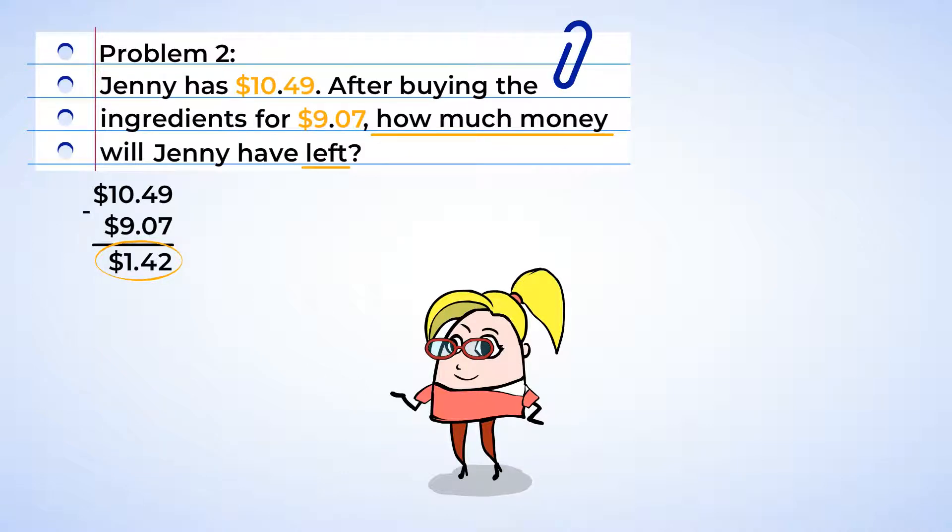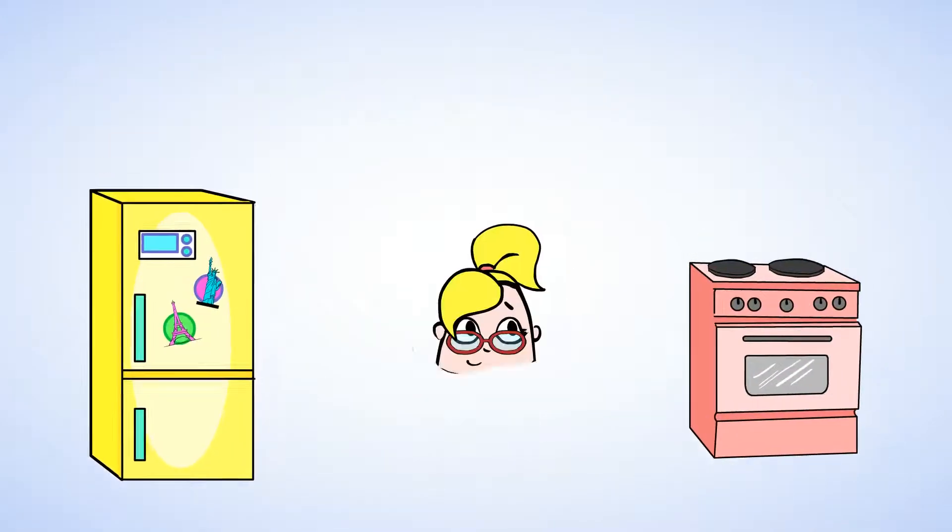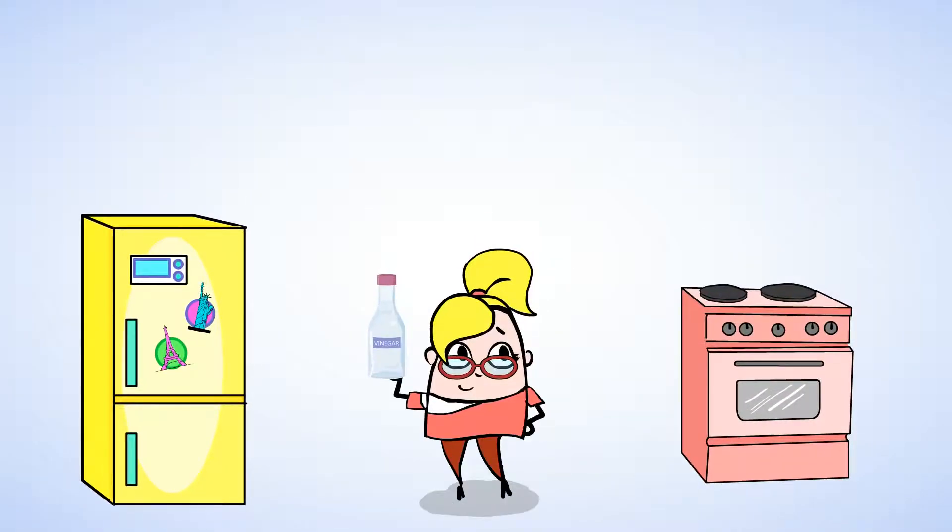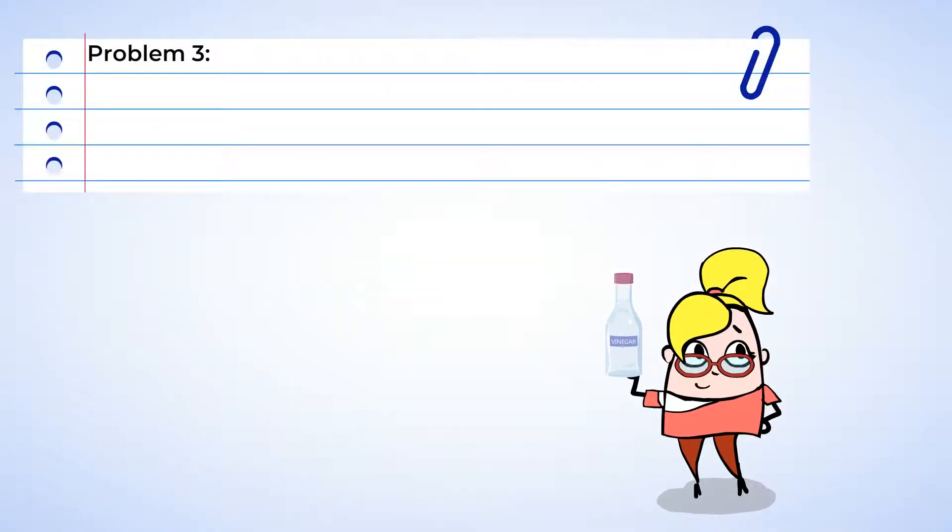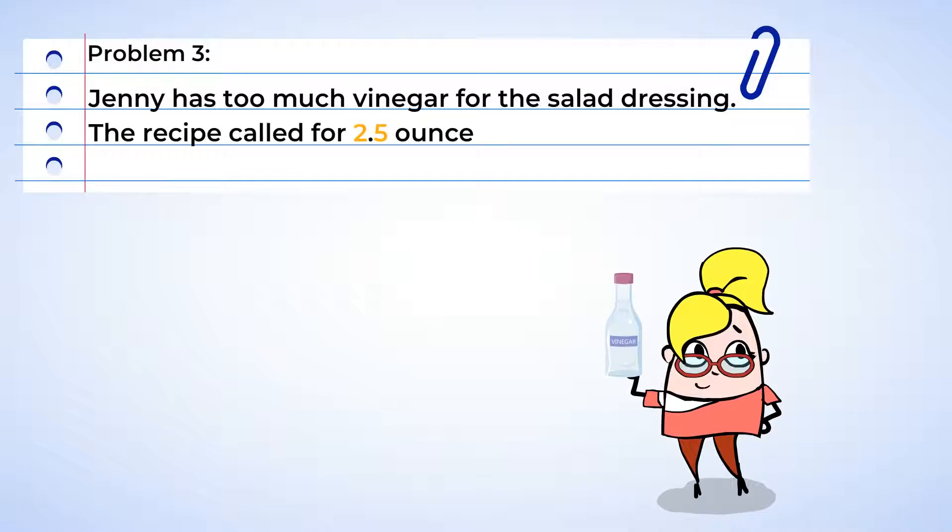See? It's useful to practice addition and subtraction of decimals. Just imagine if you were in Jenny's place. Ooh, and look! Jenny started preparing dinner already. Oh, but she poured too much vinegar for the salad dressing. The recipe called for 2.5 ounces, and she poured 3.4 ounces. Well, how much does she need to remove?